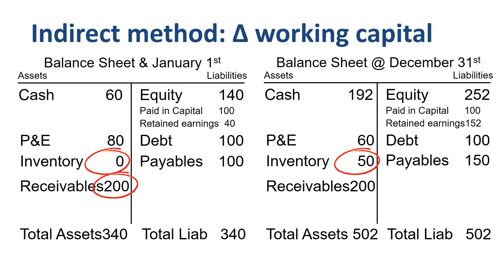If receivables stay the same year over year, then there is no net impact on cash. If payables go up, then cash goes up. In a way, your supplier is partly financing your operation. This is called a source of cash, of in this case 50.